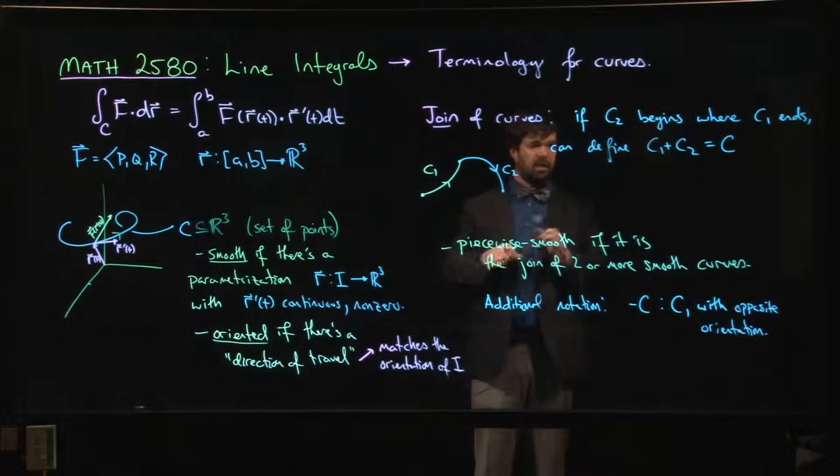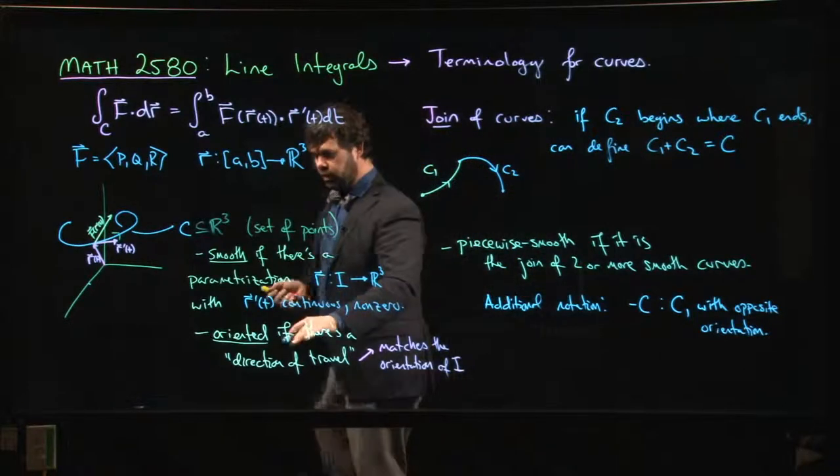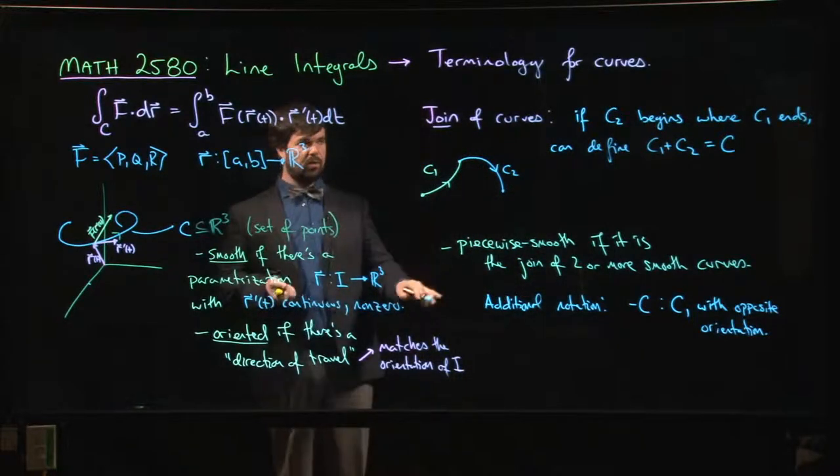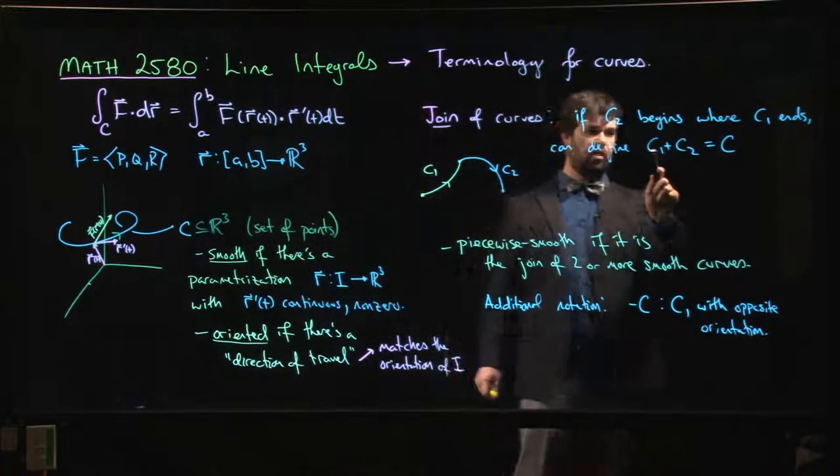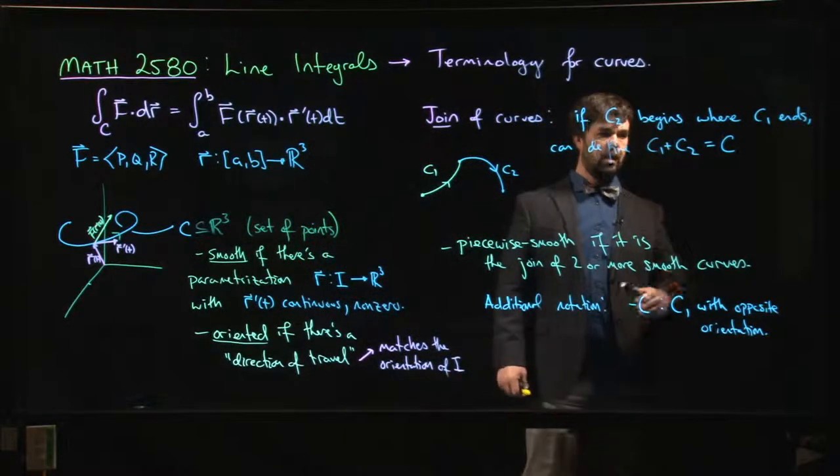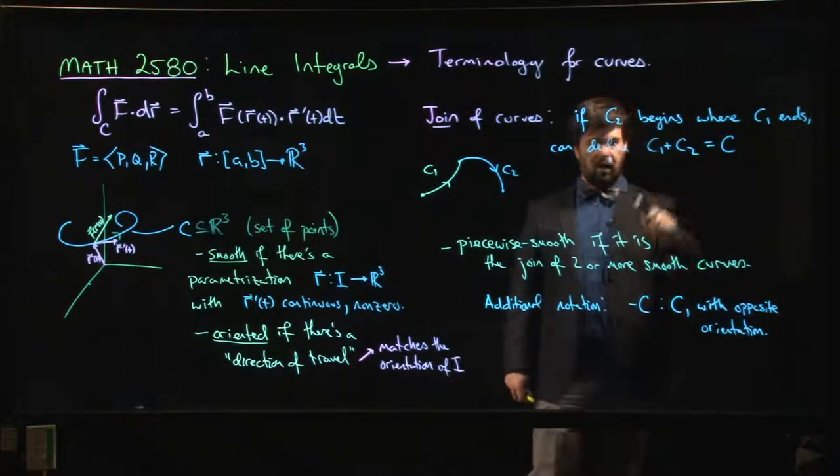So those are the main bits of language that we're going to use when we're referring to curves: smooth curves, oriented curves, piecewise smooth curves. We'll talk about joining curves together. You'll see this notation C1 + C2. You'll see that quite a bit. You'll see the -C notation.